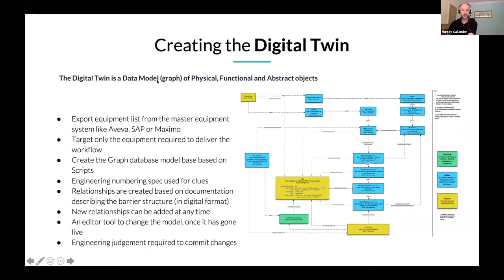Briefly on creating the digital twin: we build them from exports from systems like Aveva, SAP, or Maximo; we take engineering numbering specs and documents with barrier strategies; and then we link them to source systems such as the control system for device alerts — which might be Honeywell or ABB — maintenance in Maximo or SAP, and third-party systems like Vantage or Synergy.